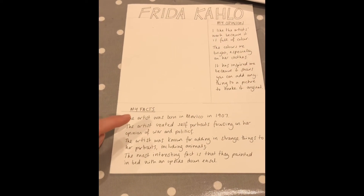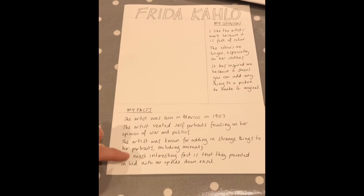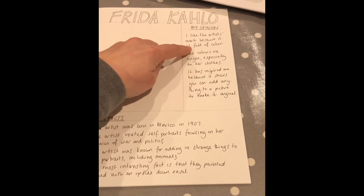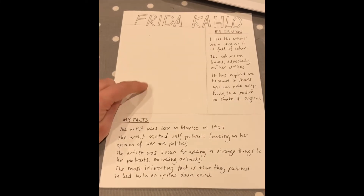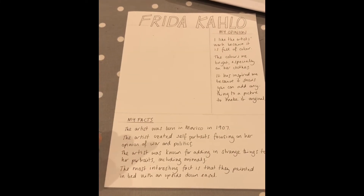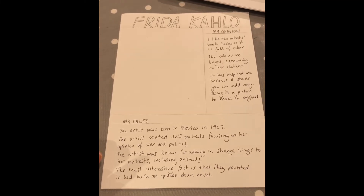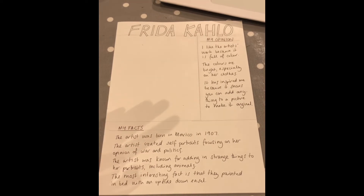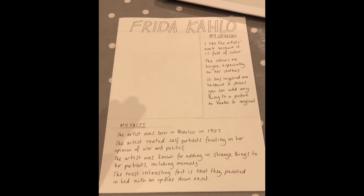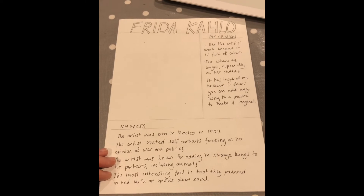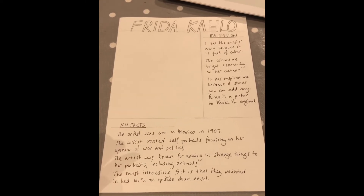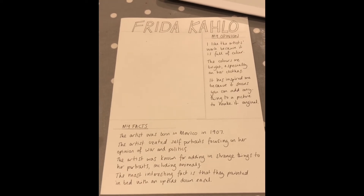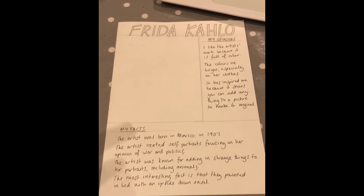I've just finished my writing. I've got my four fact sentences and I've used the worksheet to help me start those, and I've got my three opinion sentences. I'm now going to complete my page by adding a drawing of one of Frida Kahlo's works from the PowerPoint. If you only get to this point and don't have time for the picture, it's absolutely fine because I know for some of you the writing will take time. If you are able to go onto a picture, that's really good, but the picture is more of an extension for if you have time.